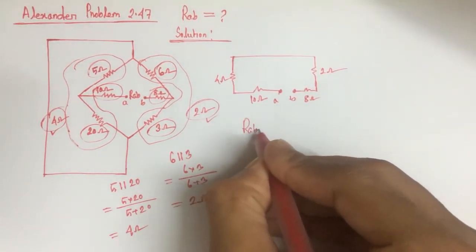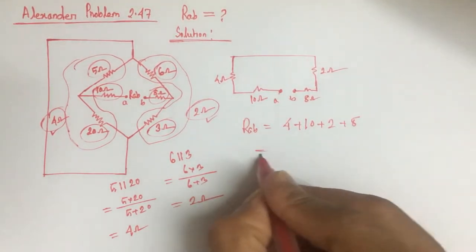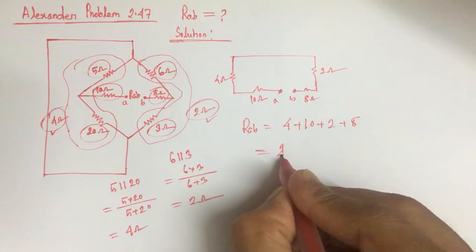Now, RAB is equal to 4 plus 10 plus 2 plus 8, that is 24 ohm.